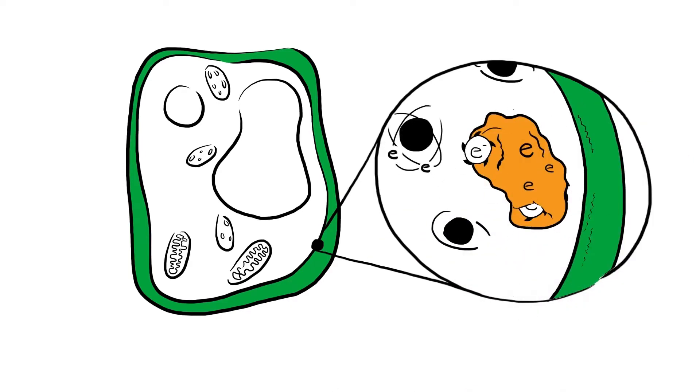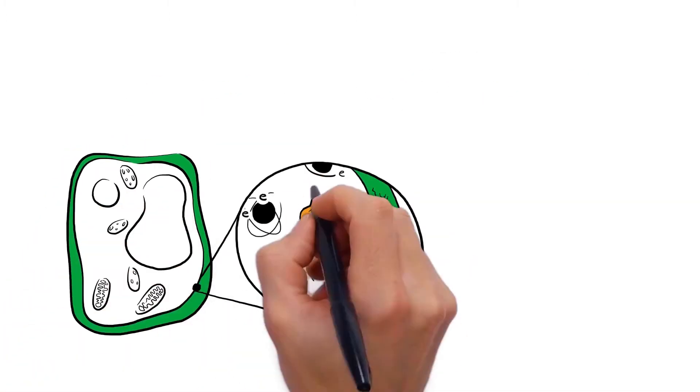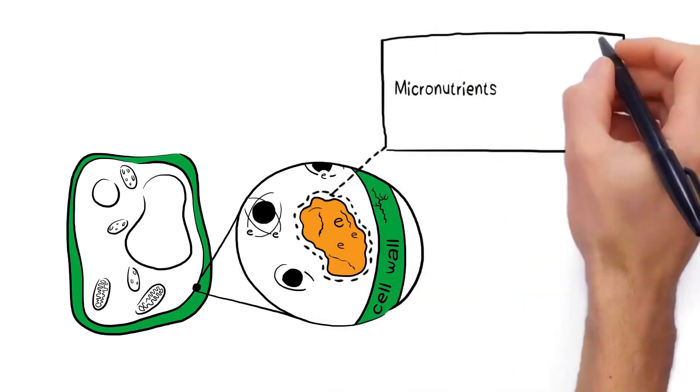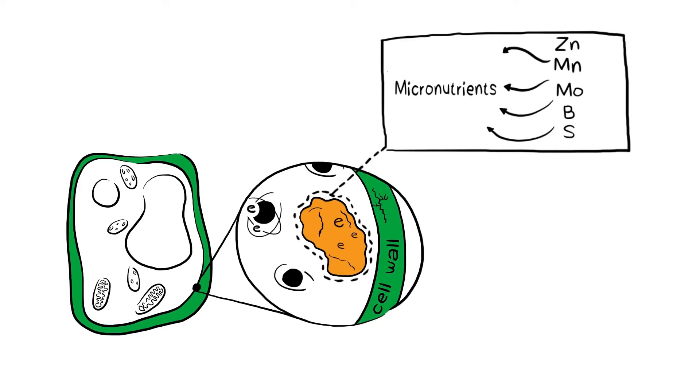Under stress, the plant produces defensive enzymes and other organic molecules. Many of these molecules require macro and micronutrients such as zinc, manganese, molybdenum, boron, and sulfur as precursors to their production.